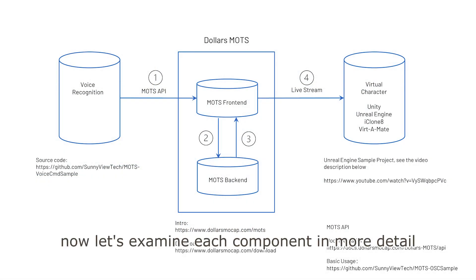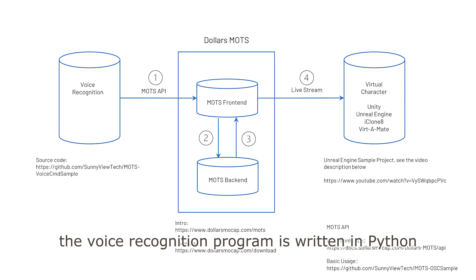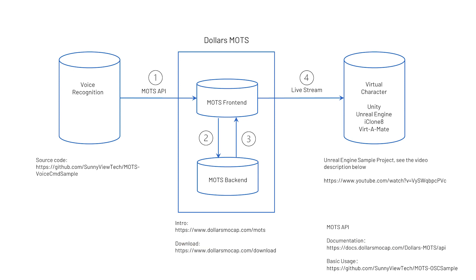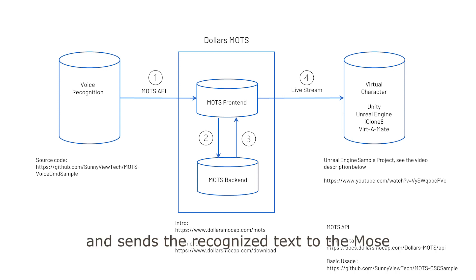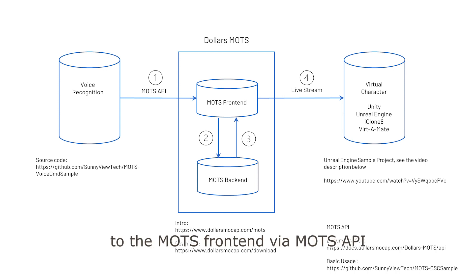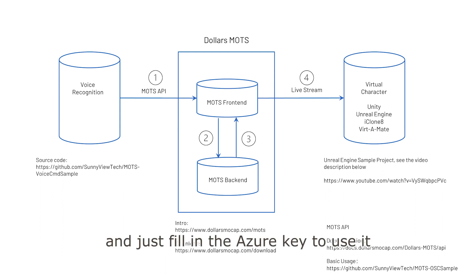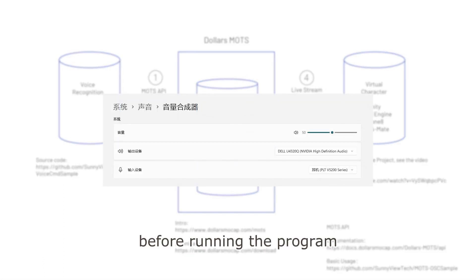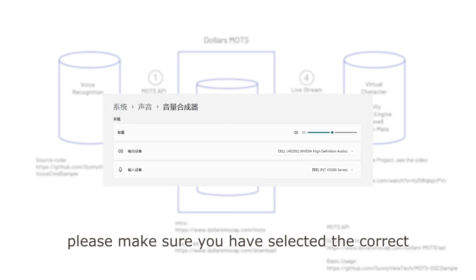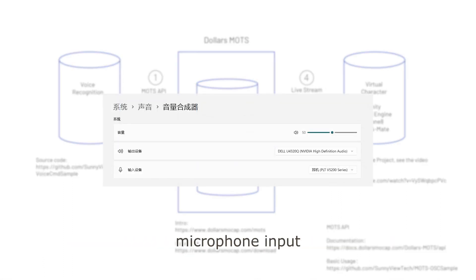Now let's examine each component in more detail. The voice recognition program is written in Python. It uses Azure's API for voice recognition and sends the recognized text to the Moe's frontend via Moe's API. You can download the source code from GitHub and just fill in the Azure key to use it. Before running the program, please make sure you have selected the correct microphone input.